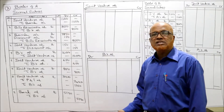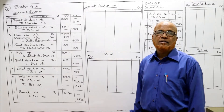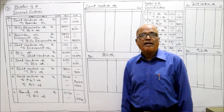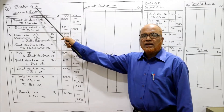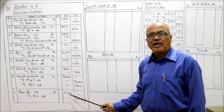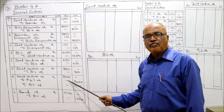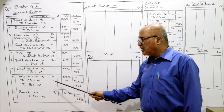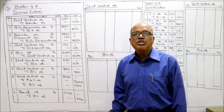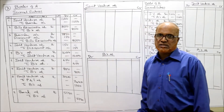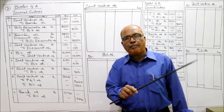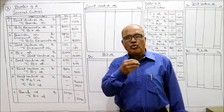B's profit comes to 1,360. The entry is: Joint Venture Account Dr. to P&L Account - the profit of A will be transferred to P&L account and the profit of B will also be transferred to P&L account - 3,400 total.